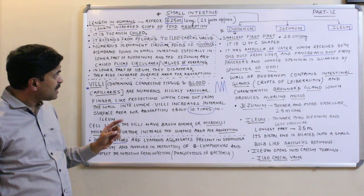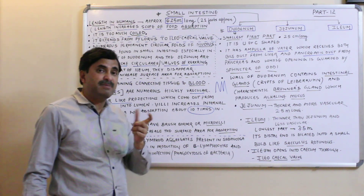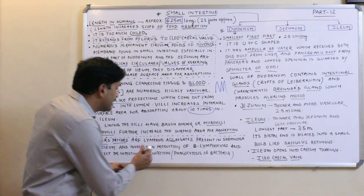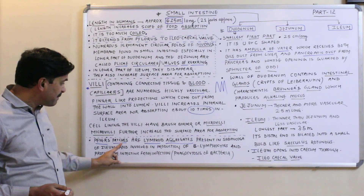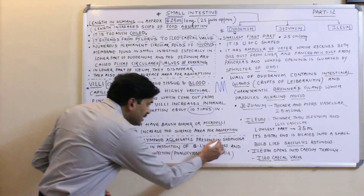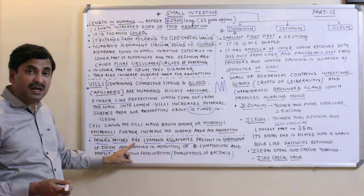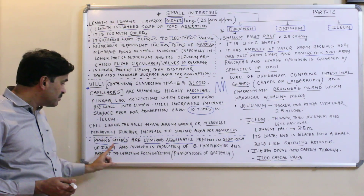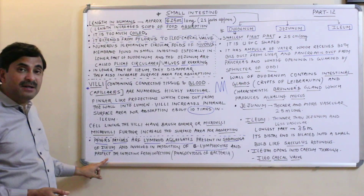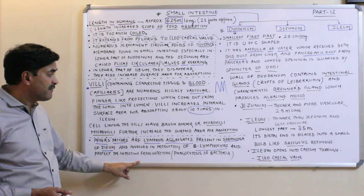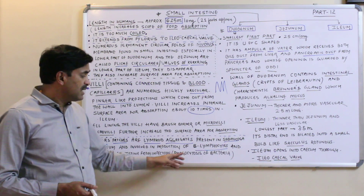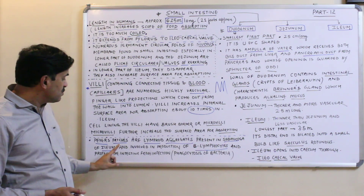One more important structure for competitive exams is Peyer's patches. Peyer's patches are lymphoid aggregates — lymphoid tissues — present in the submucosa of the ileum. They are involved in the production of B lymphocytes, and therefore protect the intestine from infection. Because of the presence of lymphocytes, they engulf harmful bacteria and prevent the small intestine from infection — they show phagocytosis of bacteria.